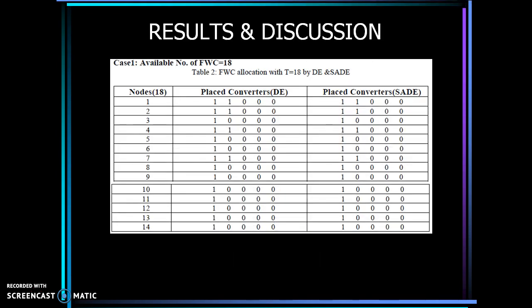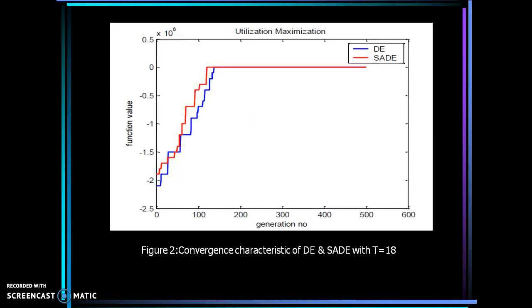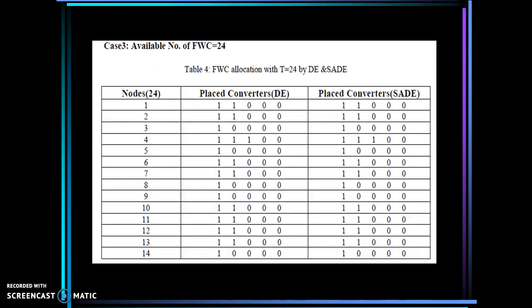Now, coming to the results, we have taken the utilization matrix through computer simulation, and the mathematical models have been implemented under MATLAB environment. The population size of 100 has been taken in both algorithms, while there are total 500 number of iterations. Three different cases have been considered with available number of full wavelength converters, which are 18, 20, and 24.